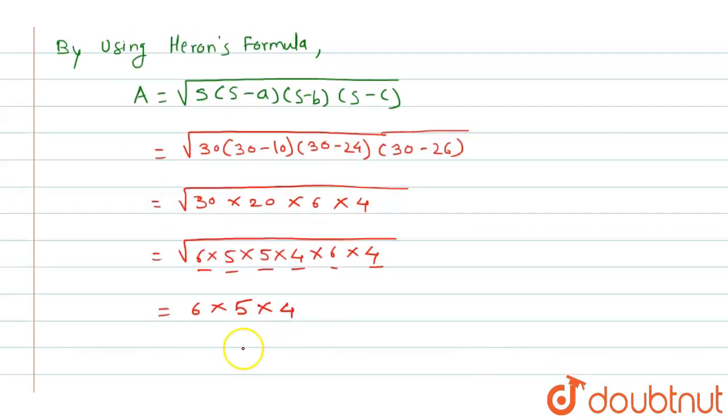applying the square root: 6 × 5 × 4 = 120 cm². We get 120 cm square.